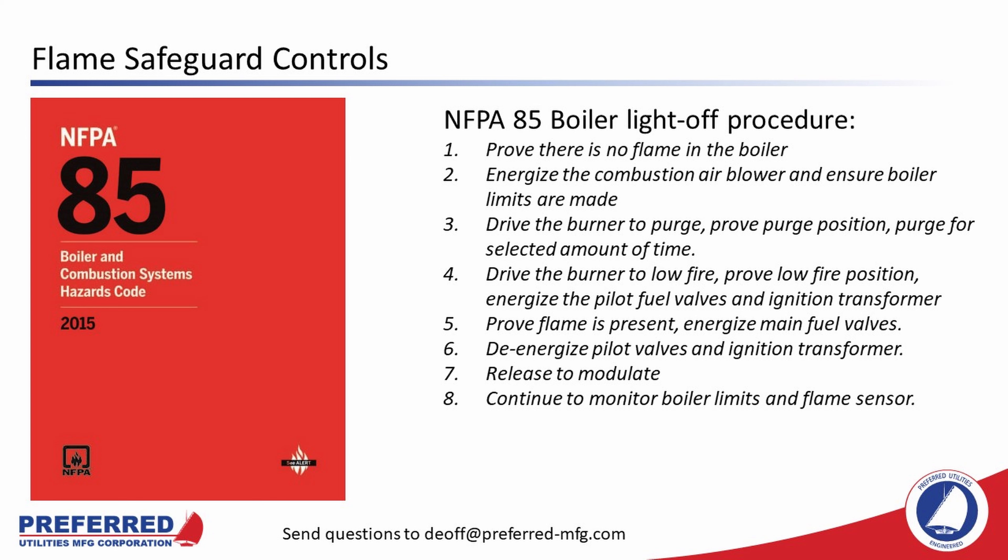Flame safeguard controls are covered by NFPA 85, which provides very specific rules governing the shutdown, light-off, and monitoring of boilers 12.5 million BTUs per hour and larger. Smaller boilers are covered by CSD1 — controls and safety devices for automatically fired boilers. The two codes are very similar, but if you're going to be working on boilers in these size ranges, you need to know the specifics of both codes.